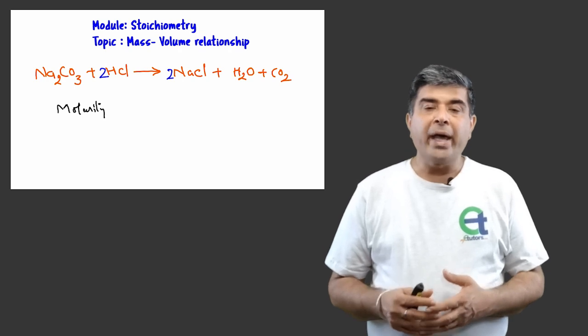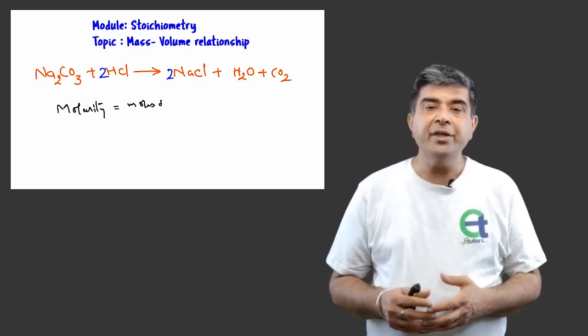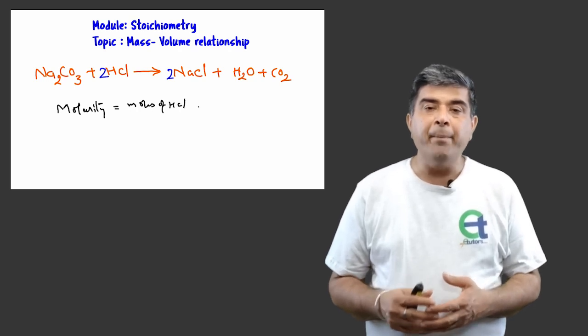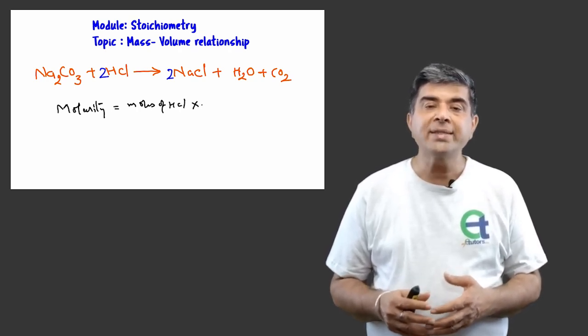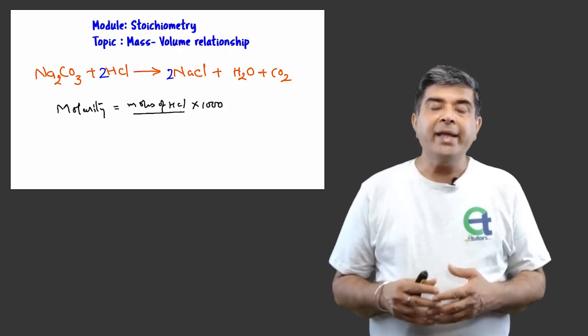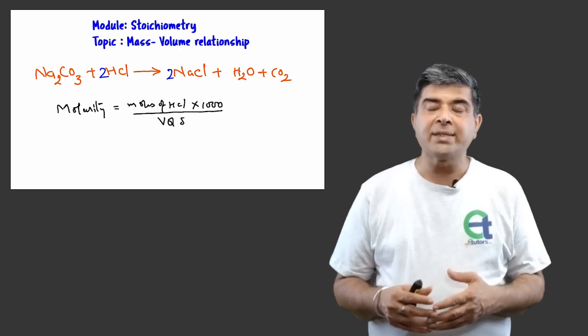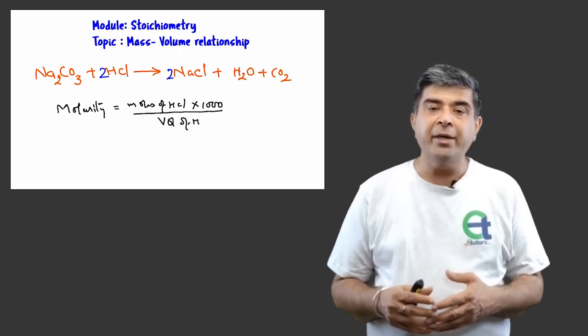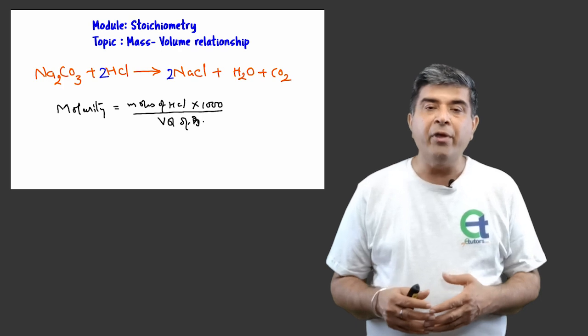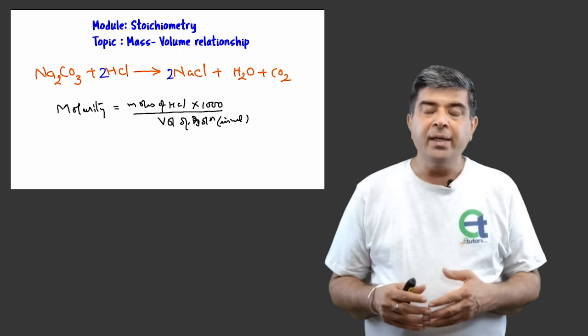Next step would be calculating volume of hydrochloric acid, as molarity of hydrochloric acid is known. And by definition, molarity is number of moles of solute, in this case hydrochloric acid, per liter of solution. And it can be simplified as number of moles of hydrochloric acid times 1000 divided by volume of the solution.